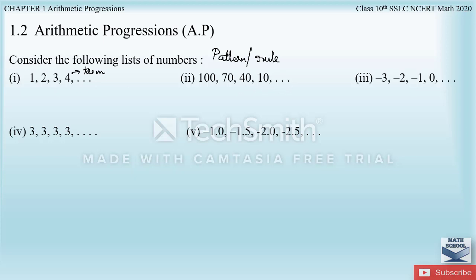In the first list, each term is one more than the term preceding it. If you consider the first number, that is 1, and add 1, you get the succeeding term 2. Again, 2 plus 1 gives 3, and 3 plus 1 gives 4. We observe that each term is one more than the preceding term.